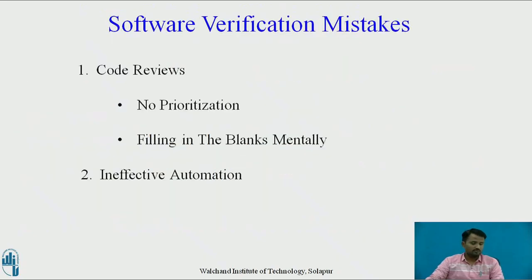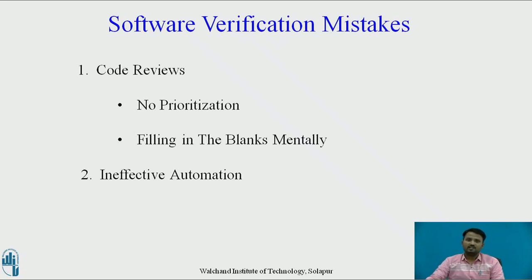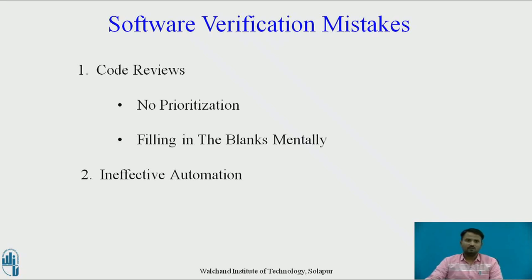Code reviews: It is tough to build working, reliable software if your development habits are full of novice mistakes. Code review contains the first point: no prioritization. Let's say you have 4000 lines of code to review in the next two days. How would you approach that problem? There is an absence of guidance, so each developer will take their own approach. Some might focus on database issues while others are more concerned with security. You can solve this problem by focusing your verification efforts on the top priorities.